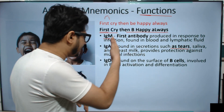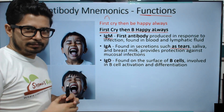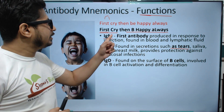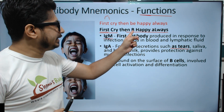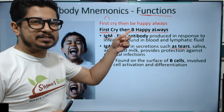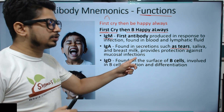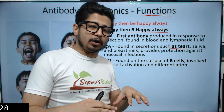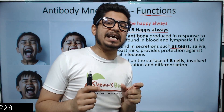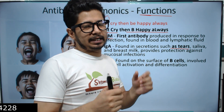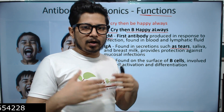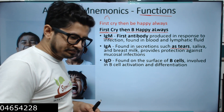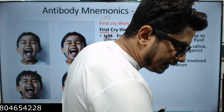Next is D — IgD. In the mnemonic 'first cry then be happy always,' D corresponds to 'B': B means B cells. IgD is found on the surface of B cells. Immunoglobulin D is present as a receptor of B cells, so it is called the B cell receptor.